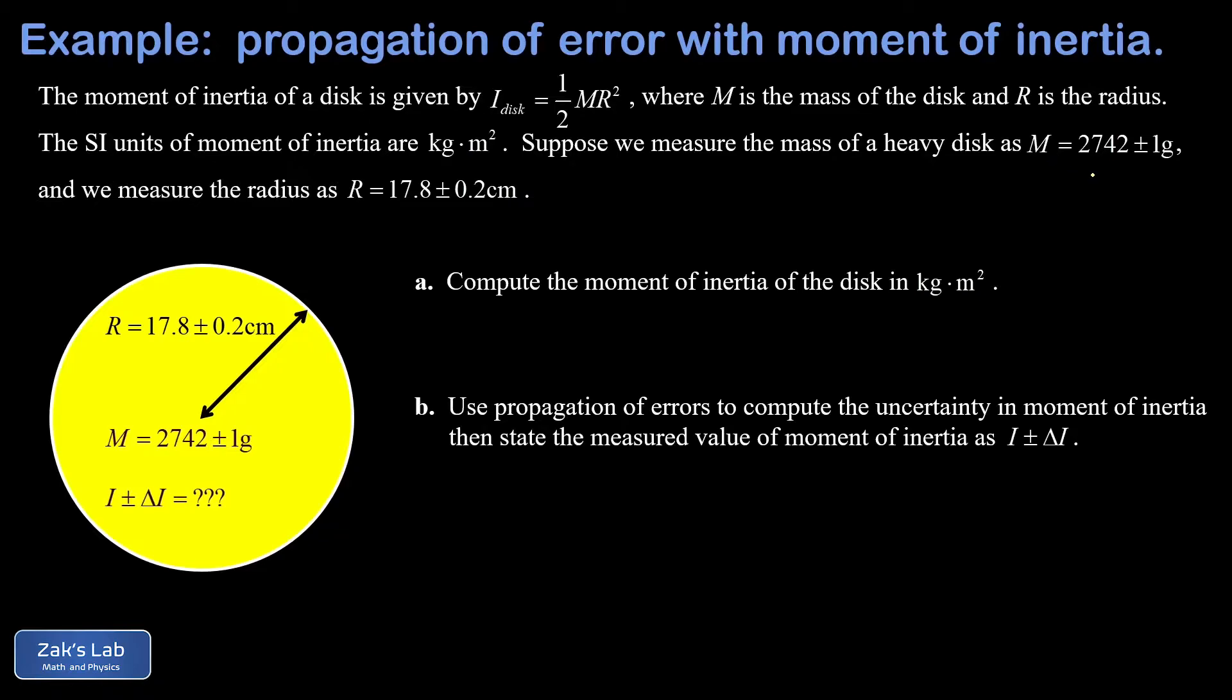The mass of the disc is given to us in grams as 2742 grams plus or minus one gram, but what we're going for are kilogram meters squared, so we need to get this into SI units. I just have to shift the decimal place three times, so this mass is 2.742 plus or minus 0.001 kilograms.